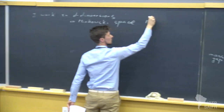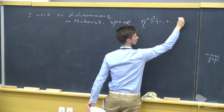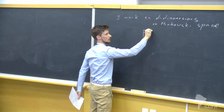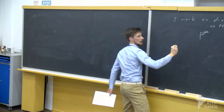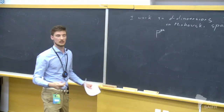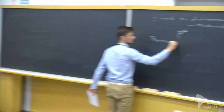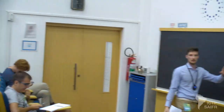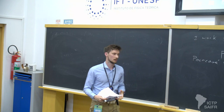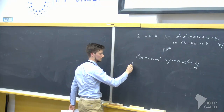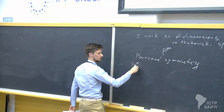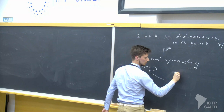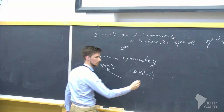Here's the metric — it's a mostly-plus metric. Here's the momentum of my particles, P mu. I assume that my system, this quantum field theory, is invariant under Poincaré symmetry. Since I'm talking about quantum mechanics, I'm interested in unitary representations of the Poincaré group. They were classified by Wigner — they are infinite dimensional and are labeled roughly by the momentum P mu and the spin, where the spin is the representation of SO(D-1), the little group.